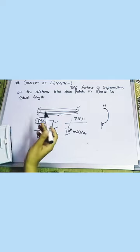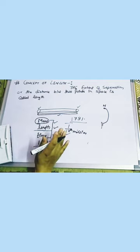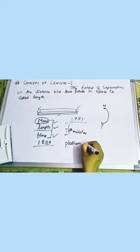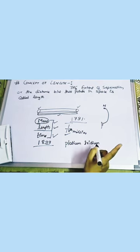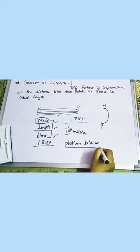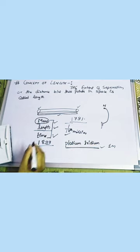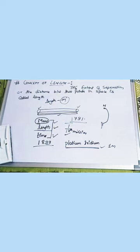Later on, this definition was redefined in 1899. The length was redefined as the distance between two lines marked on a platinum-iridium rod kept in a laboratory at a constant temperature of 273 Kelvin and one bar pressure. The length of that rod was called 1 meter. Later, when we discuss SI units, we will talk about the International Bureau's definition. The unit of length is meter.